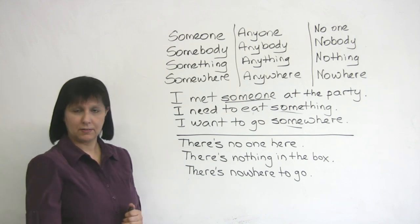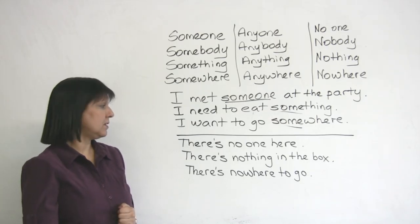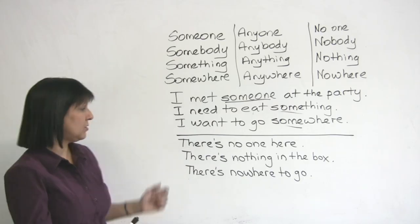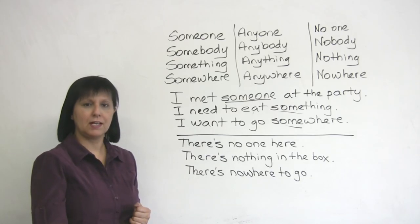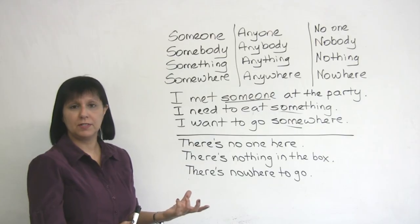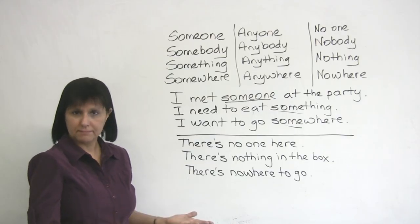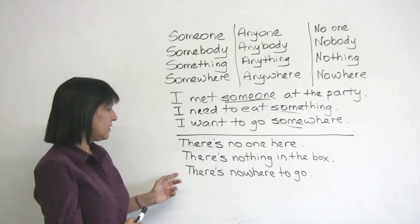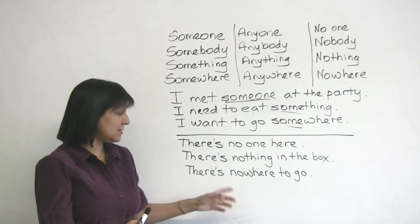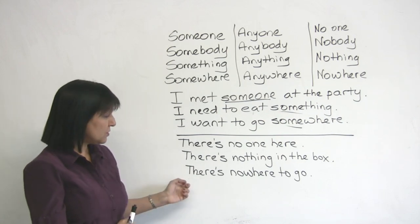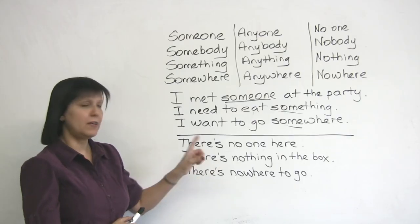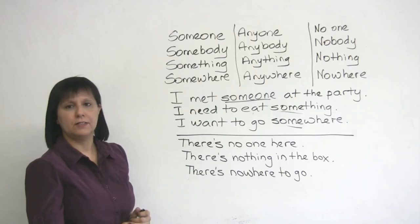Now let's look at a few examples using no. There's no one here, positive sentence. There's no one here means there's not a single person here. We could also say there's nobody here, means exactly the same thing. There's nothing in the box, nothing literally means no thing. There's nowhere to go in this town. There's no place or nowhere to go. So this also we use in a positive sentence, but in a positive sentence when there is not a single item of that kind to talk about.